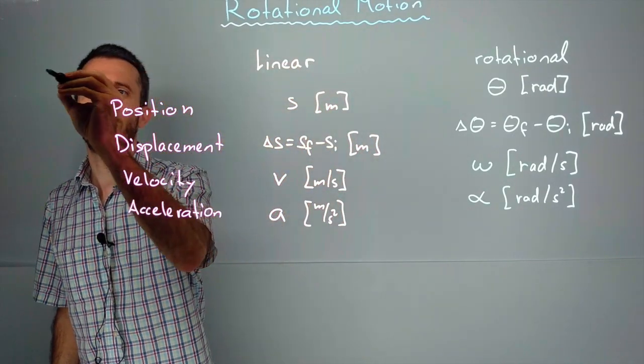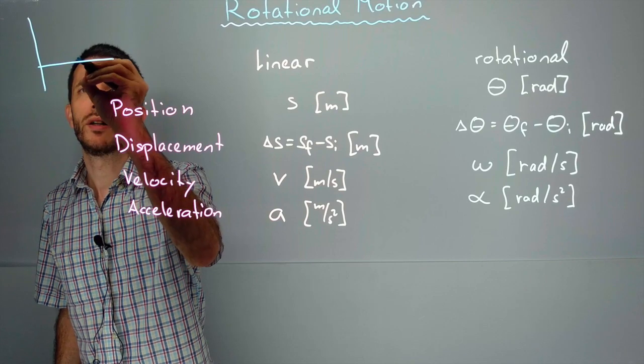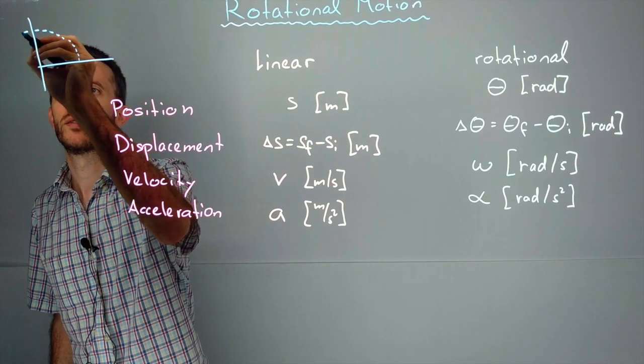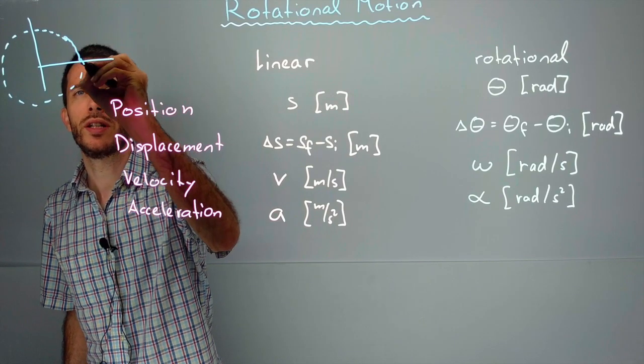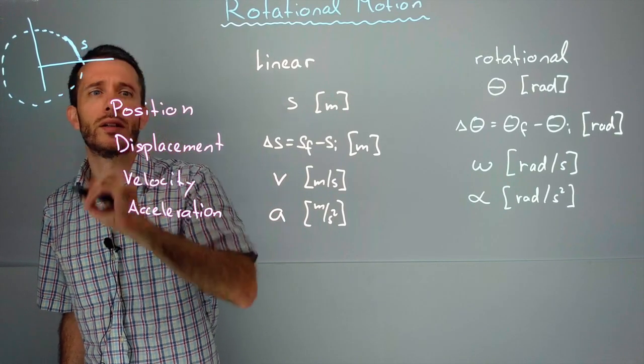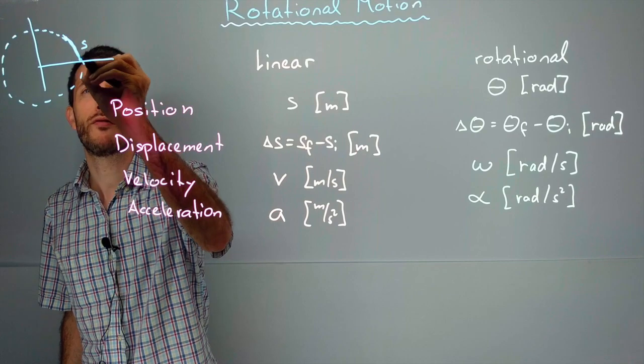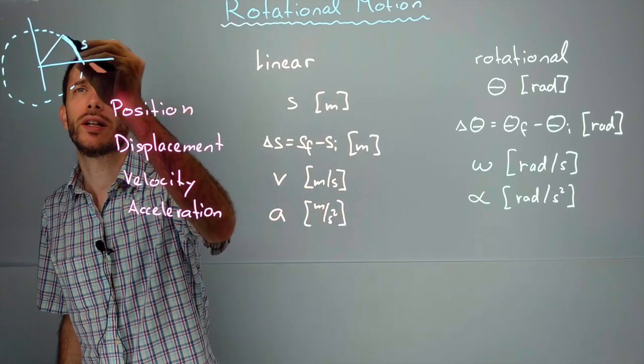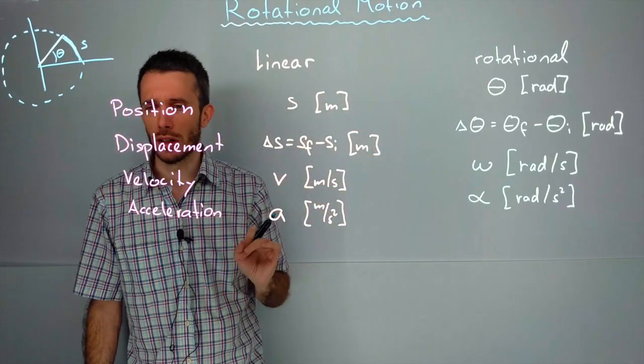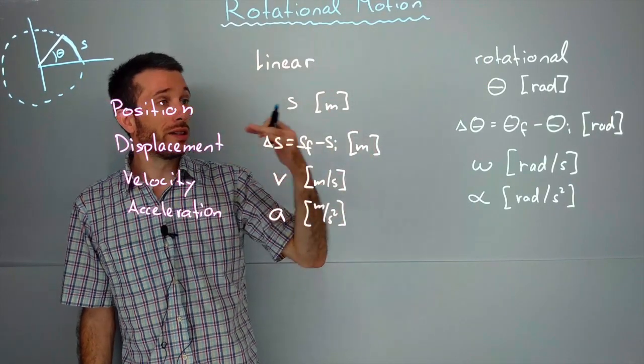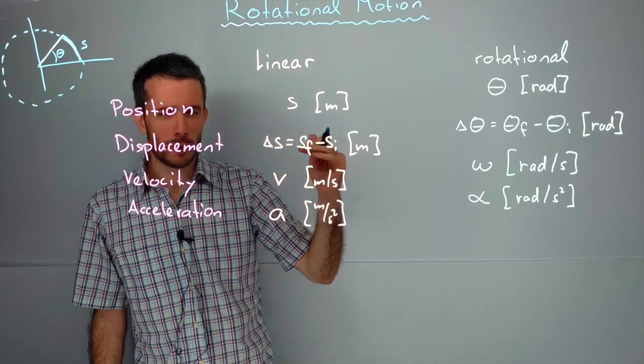Now if an object is traveling around a circular path, it can give its position either in linear variables, like position s as how far has the object traveled along the path, or we can give it in angular rotational variables. There is a link between those two which is quite simple.